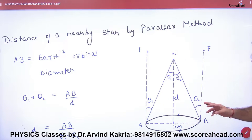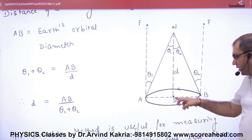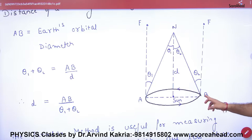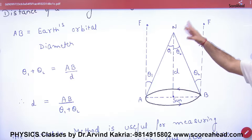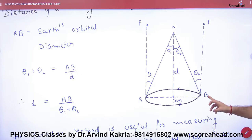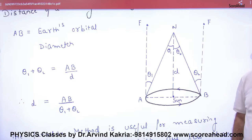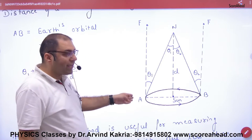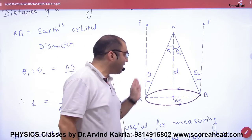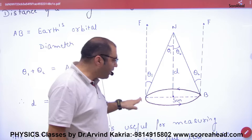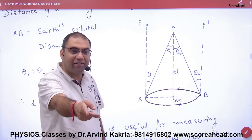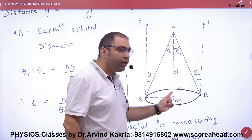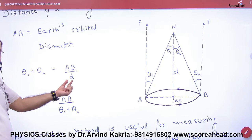Instead, we use the Earth's orbit. The Earth goes around the Sun in 365 days. So we observe the star today from position B in the orbit and measure the angle θ2. Then we wait 6 months — the Earth will have moved to the opposite side of its orbit. We then measure the angle θ1. The distance between the two positions is the diameter of Earth's orbit. We have applied the parallax method again: θ1 + θ2 = AB / D, so D can be calculated.